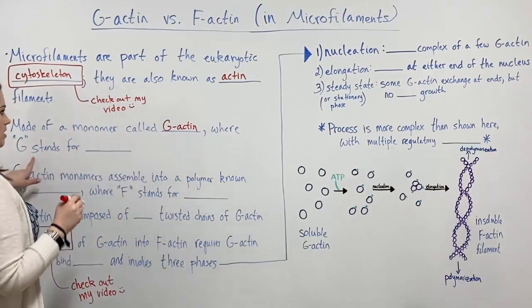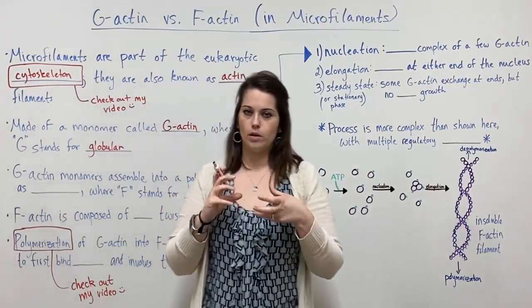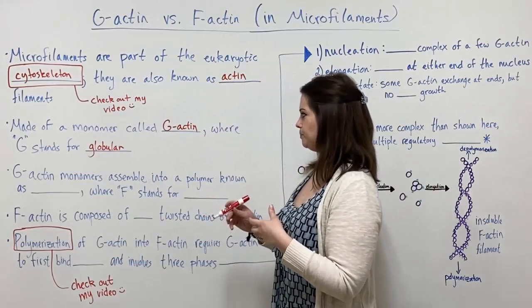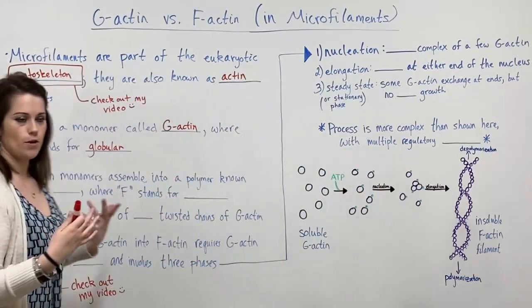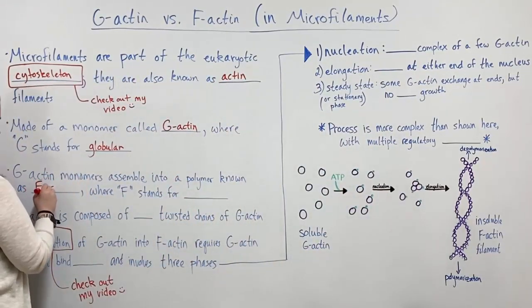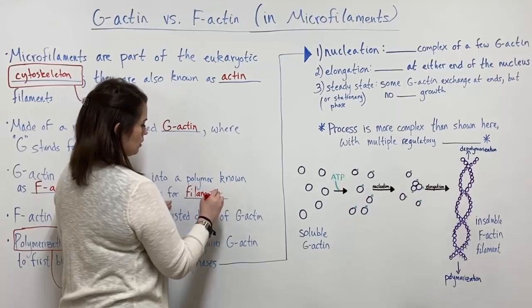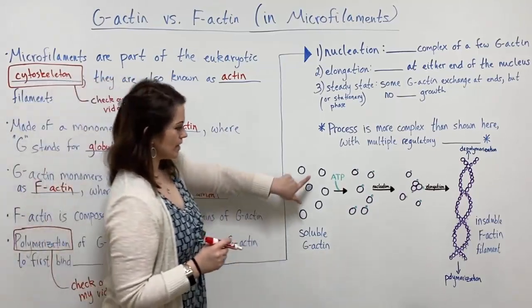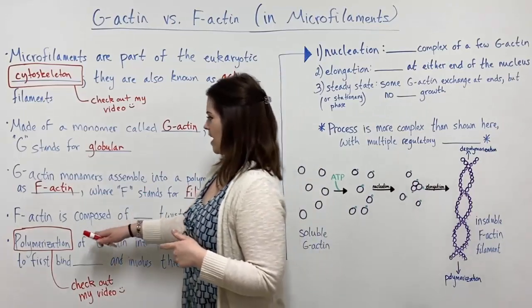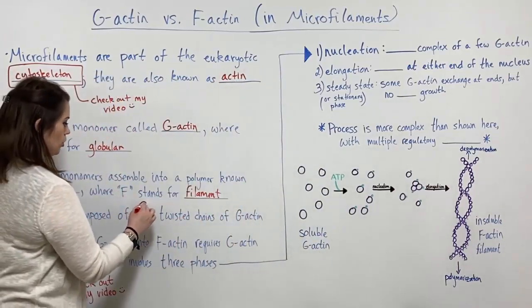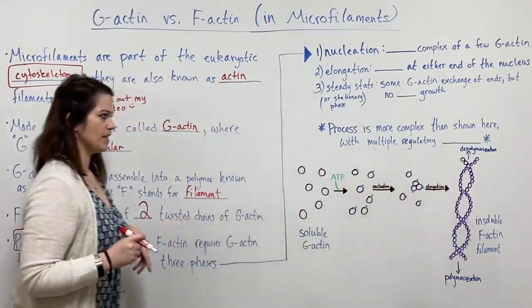Now the G here stands for globular, so this is talking about a single globular protein — G-actin. Now the G-actin monomers assemble into a polymer. The polymer made up of those G-actin monomers is known as F-actin, where the F stands for filament, or filamentous. So here we can see this soluble G-actin and here the insoluble F-actin filament. The F-actin is composed of two twisted chains of G-actin assembled into the F-actin filament.